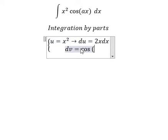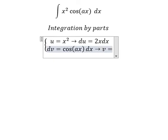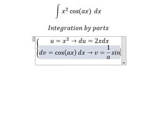For dv we have cosine ax dx. The integration of this one gives us v equals 1 over a sine ax.